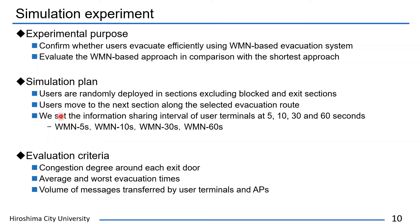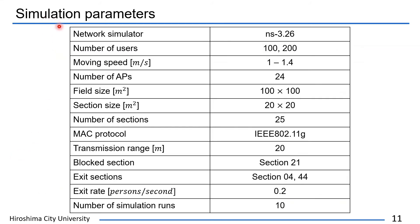These represent WMN-5, WMN-10, WMN-30, and WMN-60 seconds respectively. Evacuation criteria are congestion degree around each exit door, average and worst evacuation times, and volume of messages transferred by user terminals and APs. This table shows simulation parameters. We used the network simulator NS3. The number of users are 100 and 200. Users move at between 1 and 1.4 meters per second. We use IEEE 802.11g as the MAC protocol for user terminals and APs, and the transmission range of user terminals and APs is set at 20 meters.